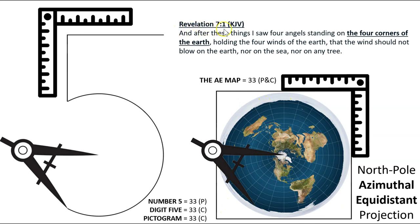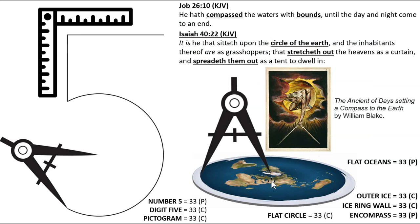As referenced in Revelation 7:1: 'And after these things I saw four angels standing on the four corners of the earth, holding the four winds of the earth, that the wind should not blow on the earth, nor on the sea, nor on any tree.' The map shown here is a close resemblance to the true layout of the continents — the North Pole Azimuthal Equidistant Projection, or AE map. The AE map equals 33 in Pythagorean and Chaldean numerology. In the middle is the Arctic center or magnetic north pole, encircled by the continents and oceans. The oceans are kept in place by a ringed wall of ice encompassing the boundary of the earth. Outer ice, ice ring wall, encompass — 33.